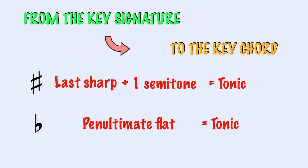To find the key chord from the key signature: we take the last sharp, raise it up by a semitone, and that is our tonic. If we have flats, we take the penultimate flat, and that is our tonic. Now, let's go in reverse — from the key chord, we want to know the number of sharps and flats included in the key signature. Ready? Let's go!